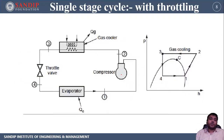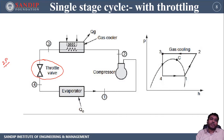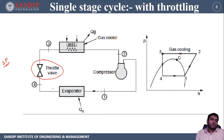Let's start with the single stage cycle with a throttling device. If you are using a throttling valve, this cycle is known as single stage with throttling. Single stage means there is one single cycle — if only two pressures are available, one higher and one lower pressure, we say it is a single stage cycle. The components are: a compressor, a gas cooler, a throttle valve, and an evaporator. This is the pH diagram for this particular cycle.